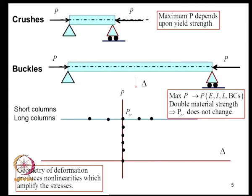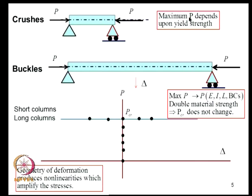Consider an axially loaded beam element. As P increases, the maximum P that can be applied depends on the compressive strength — meaning P depends on the yield strength of the material. We can increase P until the material starts yielding. However, if the length of the column becomes large and we keep increasing P, the maximum load the structure can carry depends not just on yield strength but on Young's modulus, area moment of inertia, length, boundary conditions, and so on.